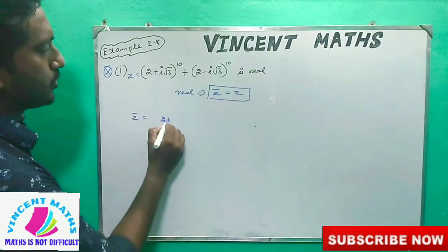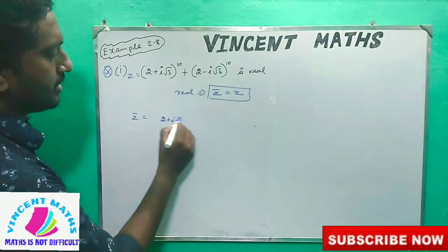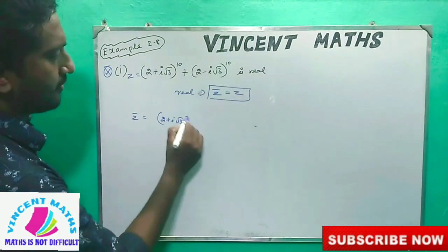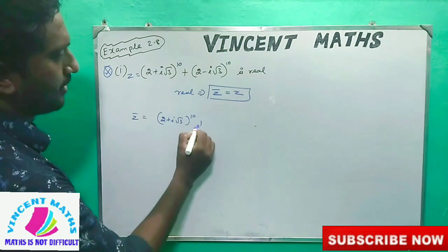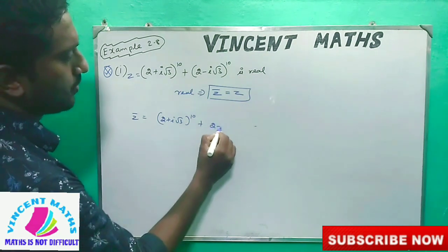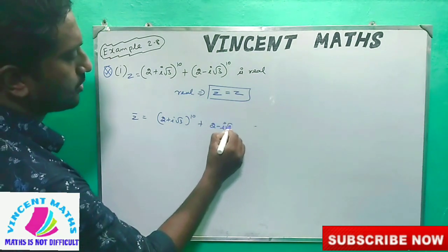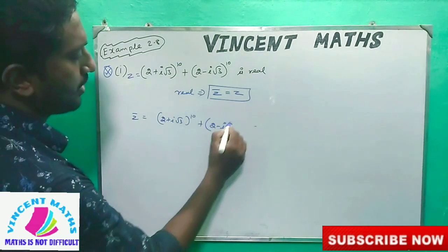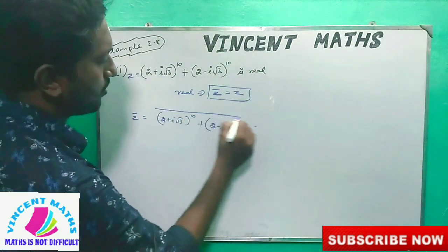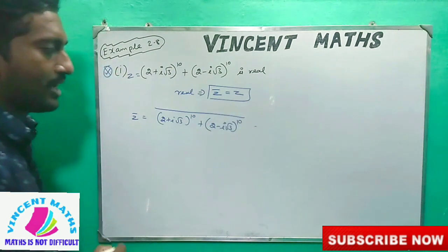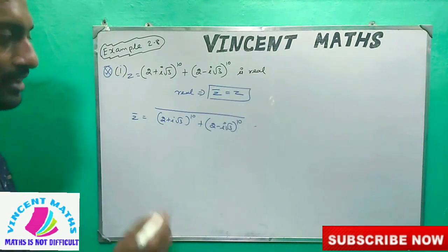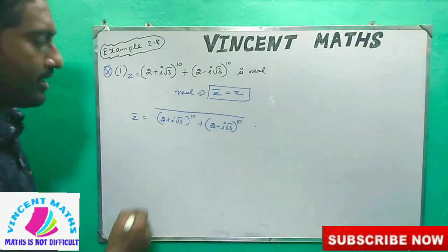Consider 2 plus i root 3, to the power 10, and 2 minus i root 3, to the power 10. We can't say it directly.